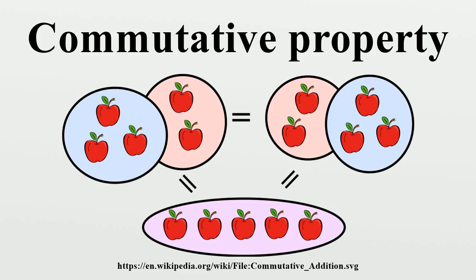Commutative operations in everyday life: Putting on socks resembles a commutative operation, since which sock is put on first is unimportant. Either way, the result is the same. In contrast, putting on underwear and trousers is not commutative. Commutative addition is observed when paying for an item with cash — regardless of the order the bills are handed over, they always give the same total.